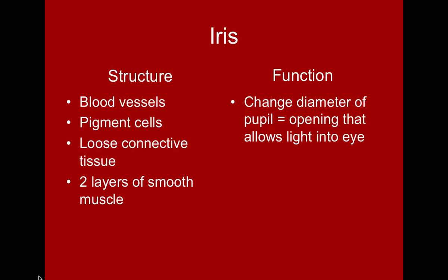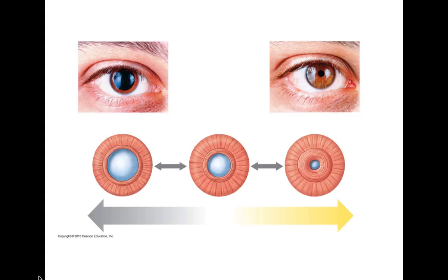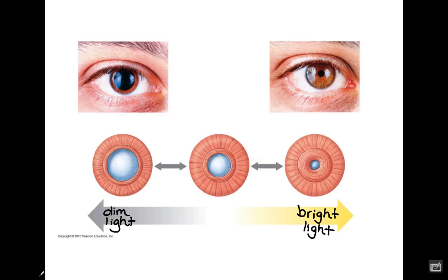Let's take a closer look at the iris and those two layers of smooth muscle. We've taken away the colored portion of the eye and left only the smooth muscle. One end of the arrow represents a dim light condition and the other a bright light condition. In bright light the pupil is very small; in dim light the pupil is very large — because of the interaction of the two muscle layers.